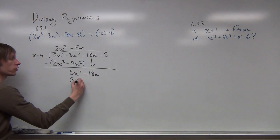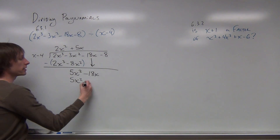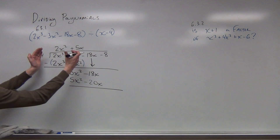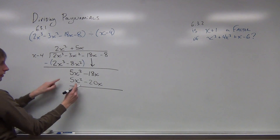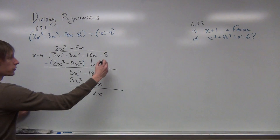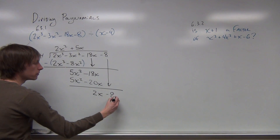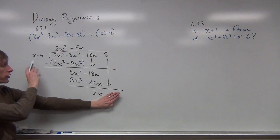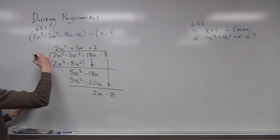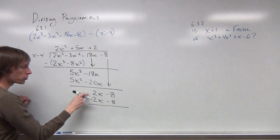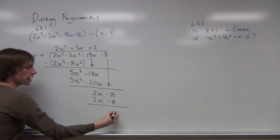5x times x makes 5x squared. 5x times negative 4 makes negative 20x. We're subtracting again — I'm just going to subtract vertically. This gives me 0. Negative 18x minus negative 20x makes a positive 2x. And of course, we bring down that negative 8. We're going to ask: what is 2x divided by x? It goes in twice. So multiply by 2: 2x times negative 4 gives negative 8. When I subtract: 2x minus 2x gives 0, and negative 8 minus negative 8 makes 0.